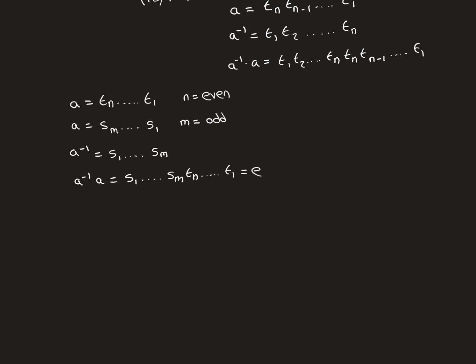Now let's begin our proof by contradiction. Assume we have a permutation A which can be broken down into two different decompositions: one with an even number of transpositions (N transpositions, T₁ ∘ T₂ ∘ ... ∘ Tₙ where N is even), and one with an odd number of transpositions (M transpositions, S₁ ∘ S₂ ∘ ... ∘ Sₘ where M is odd). We want to arrive at a contradiction.